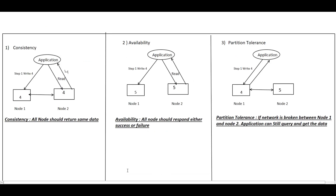In the first diagram, we have an application querying two nodes — node 1 and node 2. Suppose the application writes data (value 4) to node 1, then the same data is replicated to node 2. When the application reads from node 2, it gets value 4. So consistency means all nodes return the same data — whether querying node 1 or node 2, you get the same result.